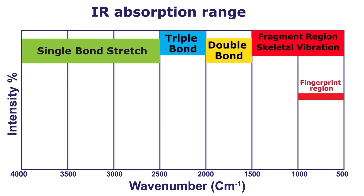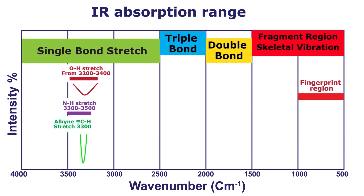Now let's look at functional groups and their predicted regions. Remember, bands can be shifted due to overlap with other functional groups or according to their position at the terminal or at the side of the compound. Hydroxyl stretch appears as a broad peak between 3400 to 3200 reciprocal cm in the absence of hydrogen bonding, but in the presence of hydrogen bonding it appears very broad between 3600 to 3500 reciprocal cm. Free N-H stretch appears between 3500 to 3300 reciprocal cm, while hydrogen-bonded N-H appears between 3350 and 3170 reciprocal cm. Alkyne C-H peak appears between 3300 to 3000 reciprocal cm.